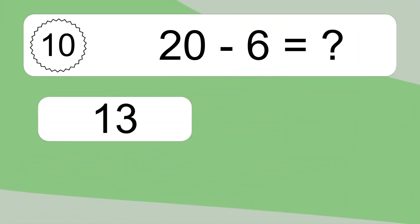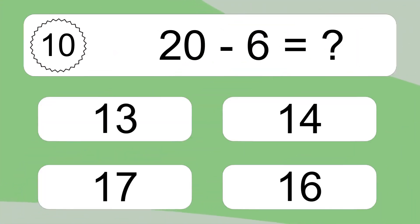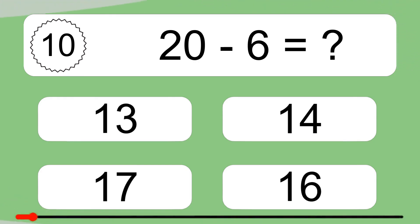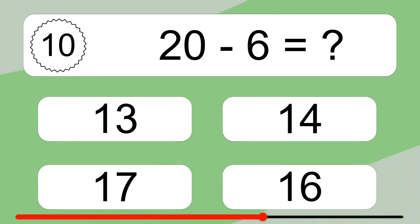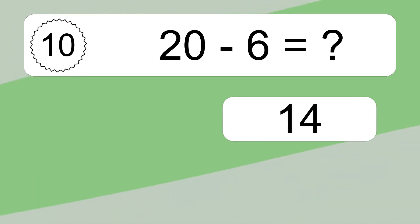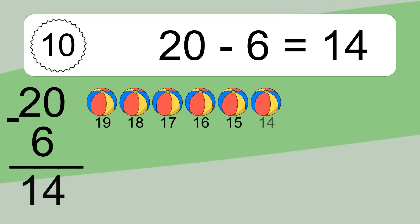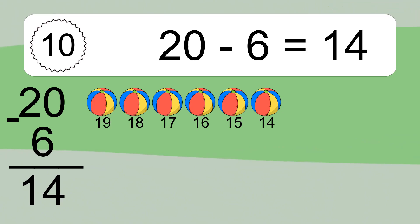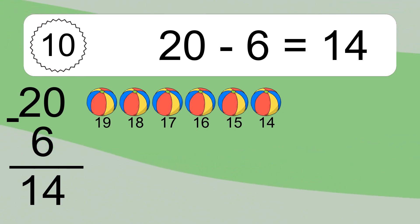20 minus 6 equals what? 20 minus 6 equals 14. Let's count it. 19, 18, 17, 16, 15, 14.